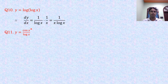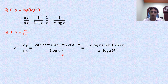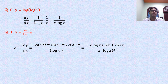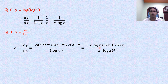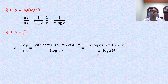Problem 11: y = cos x / log x. Using the quotient rule: dy/dx = [log x · (−sin x) − cos x · (1/x)] / (log x)². Taking x as LCM: dy/dx = (−x·log x·sin x − cos x) / (x·(log x)²).